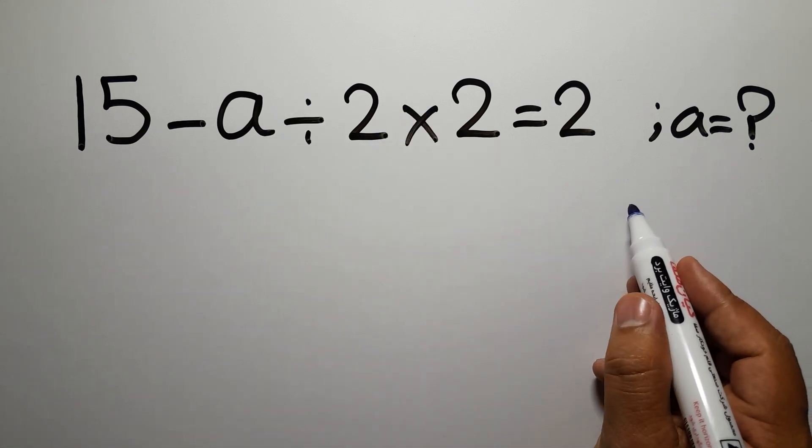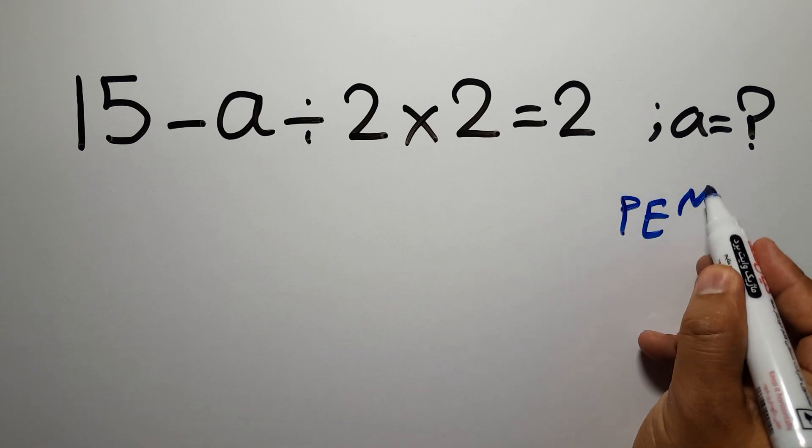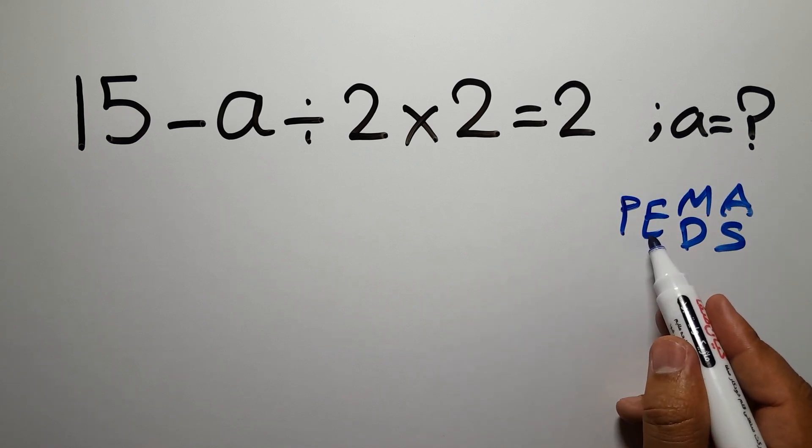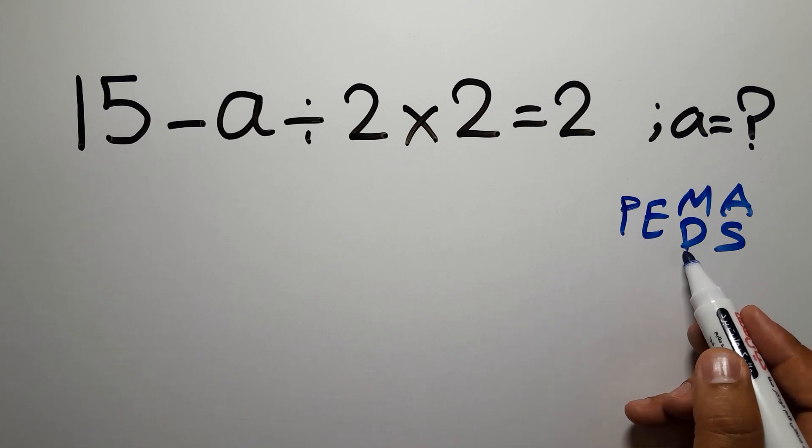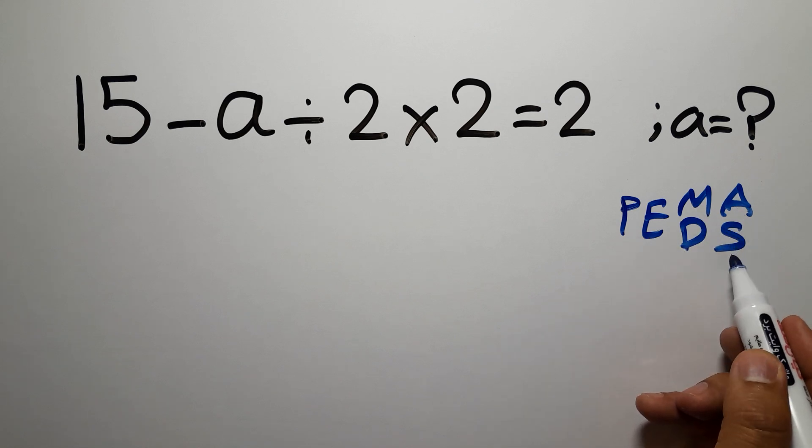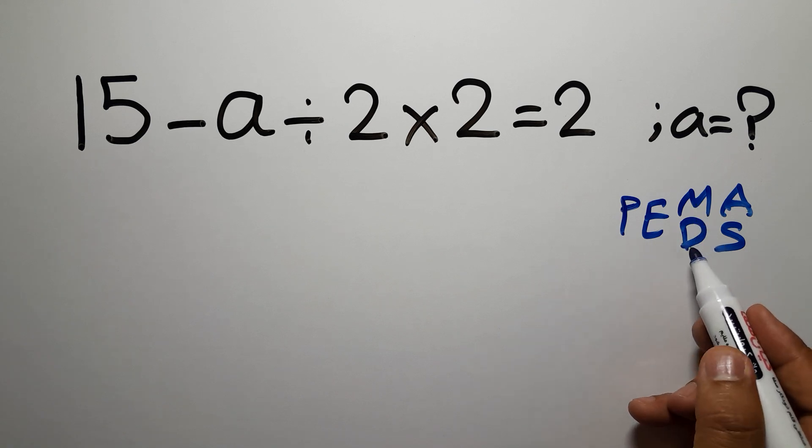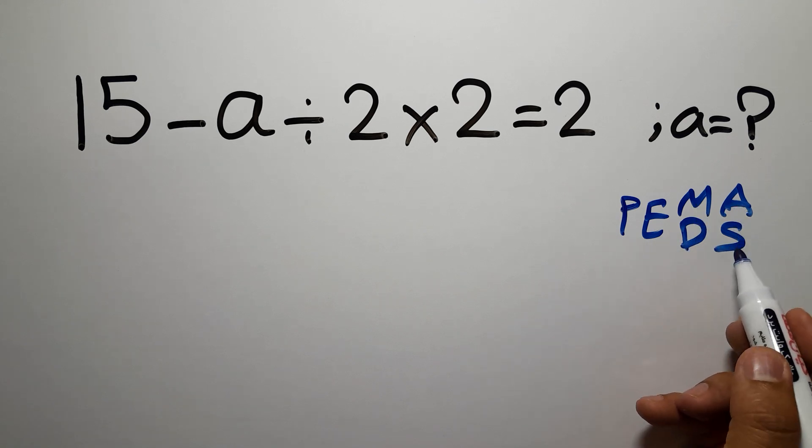According to the order of operations, which is PEMDAS: P stands for parentheses, E stands for exponents, M and D stands for multiplication and division, and A and S stands for addition and subtraction. First we do parentheses, then exponents, then multiplication or division, and finally addition or subtraction.